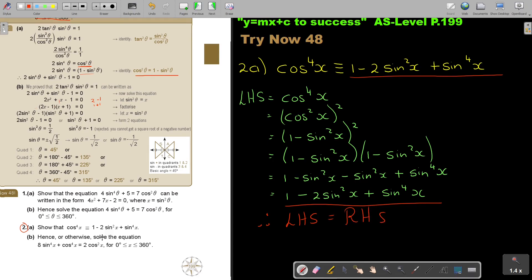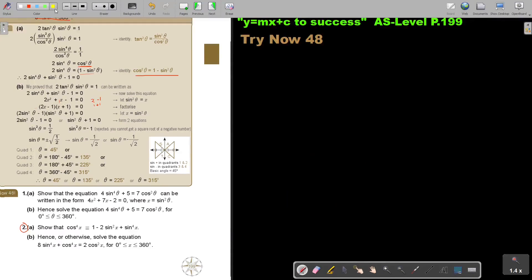Now, B or otherwise, solve the equation. Now, this is another one they gave you here. Let's start with number B. Now, first just write it down. So 8 sin to the power 4x plus cos 4x, sorry, let's just make it correct, cos 4x is equal to 2 cos squared x.